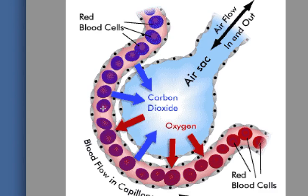The haemoglobin cells don't have any oxygen, and there's a lot of carbon dioxide in the plasma in between them. The carbon dioxide moves out, and the oxygen moves into the red blood cells and into the haemoglobin, bonds with it, and then goes back to the heart ready to be pumped around the body again. As we expire and the pressure on the thoracic cavity increases, the diaphragm pushes up and the intercostal muscles relax.